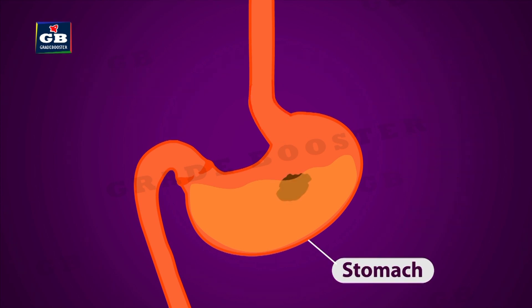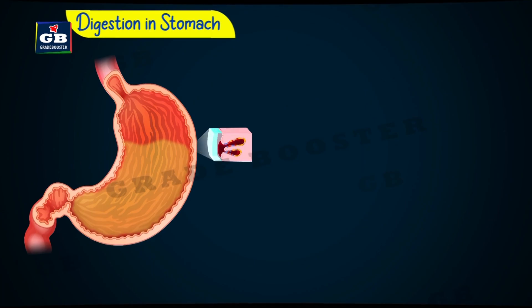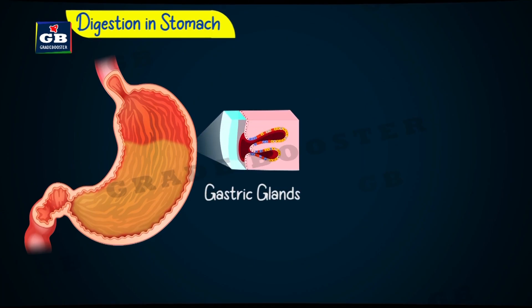This is the stomach. It is a hollow muscular organ. Gastric glands are present in the walls of the stomach and they produce gastric juice. The gastric juice has different compounds in it that help the stomach in the process of digestion.